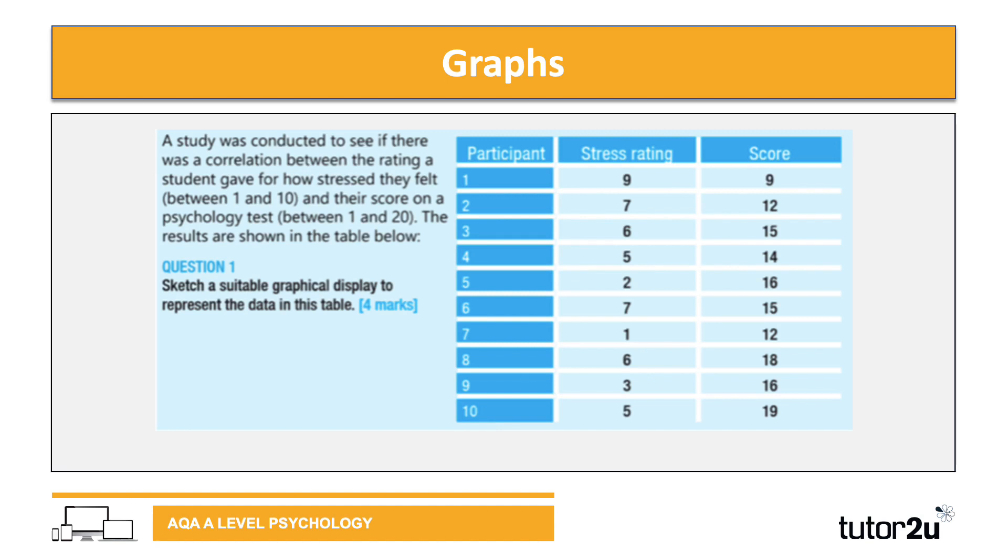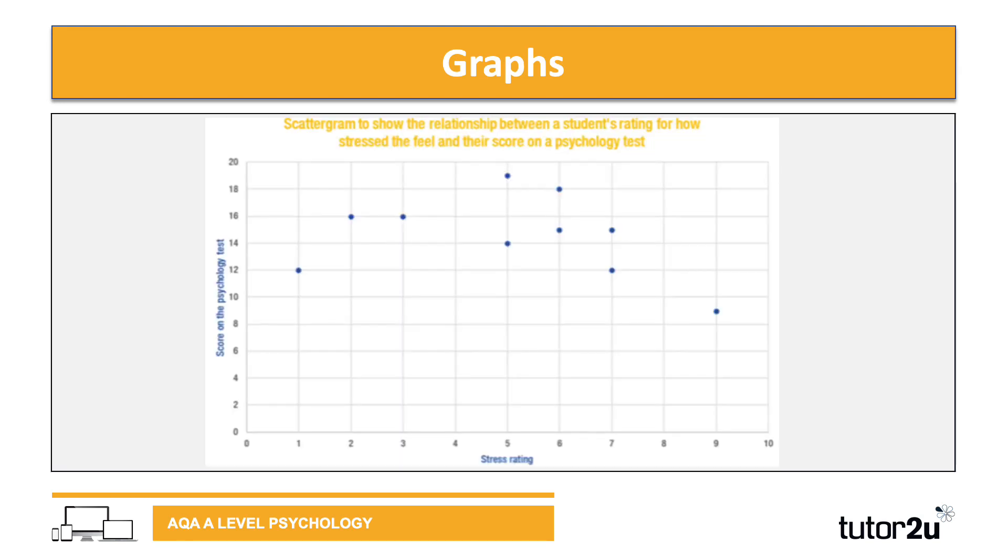The graph we need here is a scatter graph. We've got two scores - a stress rating and a test score. It should look something like this with the stress rating on the bottom axis and the psychology test score on the other axis, with a graph title and correct plots and scales.